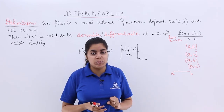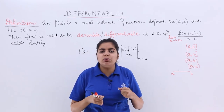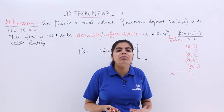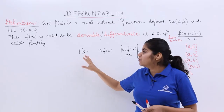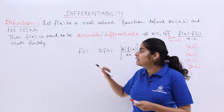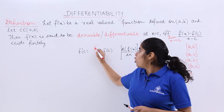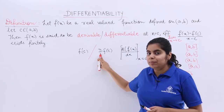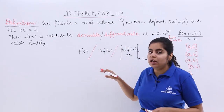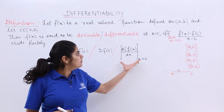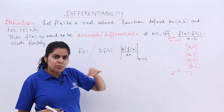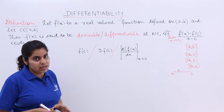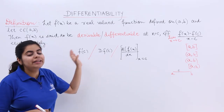Finitely means it should be a finite quantity. Now, how do we represent differentiability? If we have a function f(x) or f(c), its differentiability is shown by either f'(c), or by Df(c), or by the notation df(x)/dx when x is equal to c. But the most common notation is f'(c) or f'(x).